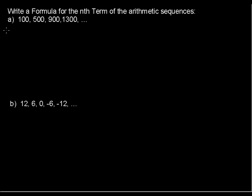Write a formula for the nth term of the arithmetic sequence: 100, 500, 900, 1300, and so on. Assuming the next one would be 1700 because it looks like we're adding 400 every time.